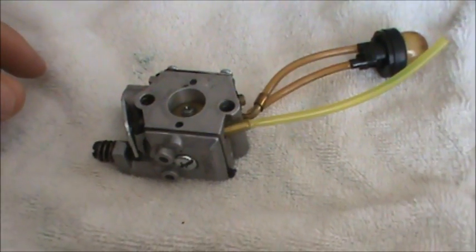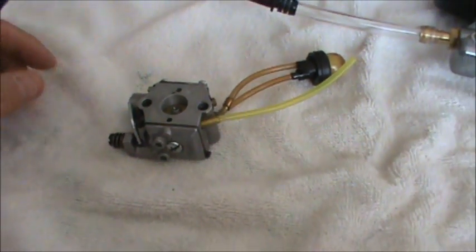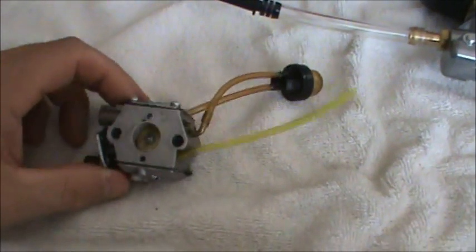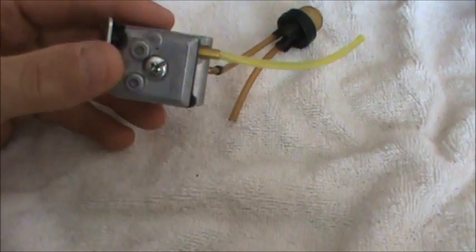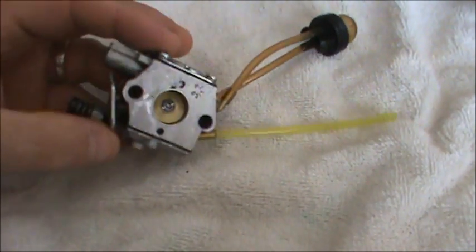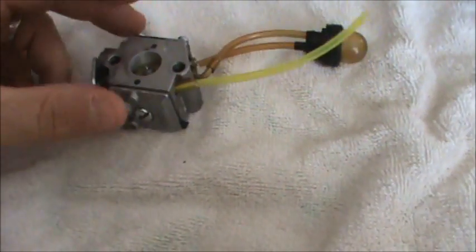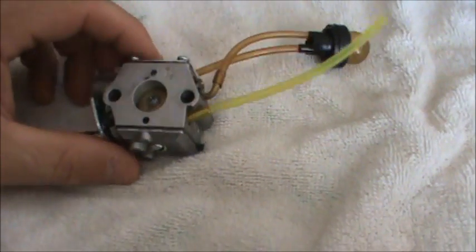How's it going everybody? This is Double Wide 6 and I've got a little project up here on the bench today. It's a small Walbro 2-cycle carburetor, a pretty common carburetor used in a lot of small engine equipment.